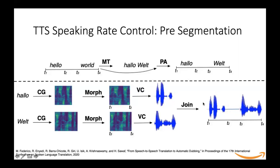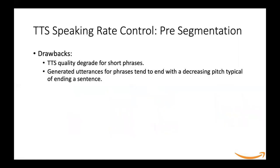However, there are certain disadvantages to this pre-segmentation approach. Number one, the TTS quality often degrades for short phrases. Number two, the generated utterance for phrases tends to end with a decreasing pitch, which is typical of ending a sentence — but we do not want each individual phrase to end with a decreasing pitch.